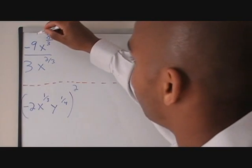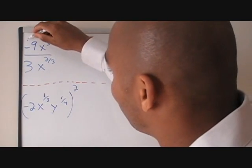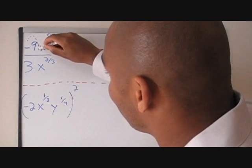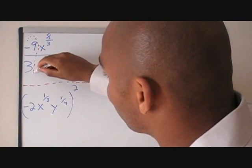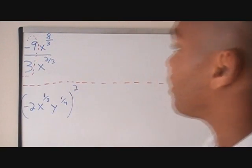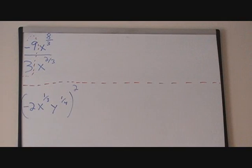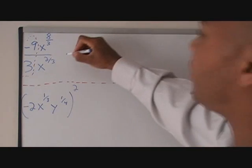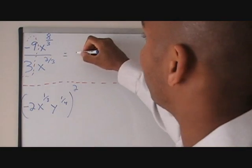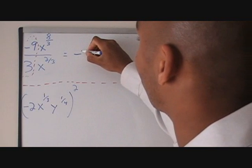I'd like to actually break this up a little bit. I'm going to draw a little circle around the negative 9 and the 3. Negative 9 divided by positive 3 — that's easy to see. That's just negative 3.